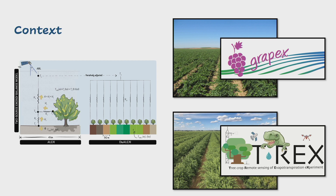We initially started doing this using the TSEB ET model, which is based on the two-source energy balance model. What it's capable of doing is taking a thermal signal and partitioning it into soil and canopy portions, and then simultaneously solving the energy balance equation for both E and T and summing them up. This is important for almond orchards and wine grape vineyards because you can clearly see tree rows and inter-rows, so it's important to quantify both those aspects.